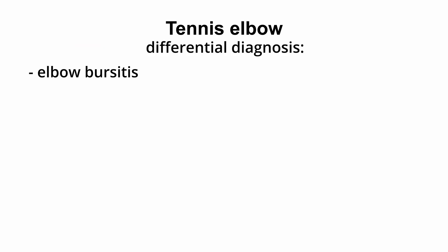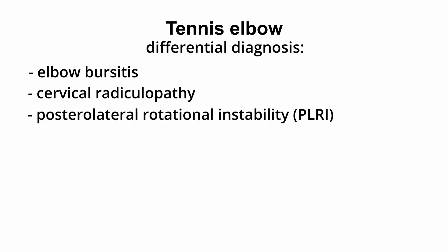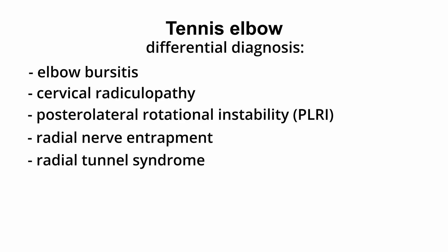Examples include elbow bursitis, cervical radiculopathy, posterolateral rotational instability, radial nerve entrapment, radial tunnel syndrome, triceps tendinitis, and even shingles. Only after performing the appropriate tests can we start working on the elbow joint, which I will show you in this video.